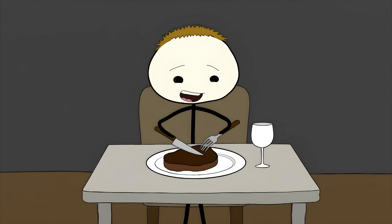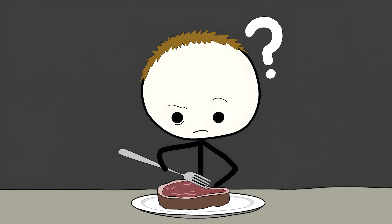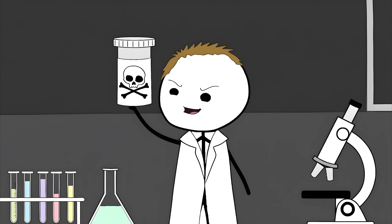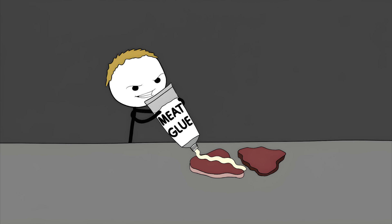2. The Frankenstein Steak. Imagine you're at a restaurant, cutting into what looks like a perfect filet mignon. The texture feels right, the color looks perfect, but something's off. That's because what you're eating might actually be meat confetti glued together to look like a premium cut. This is meat glue, or as scientists call it, transglutaminase. This stuff is like super glue for meat, and it's way more common than you think.